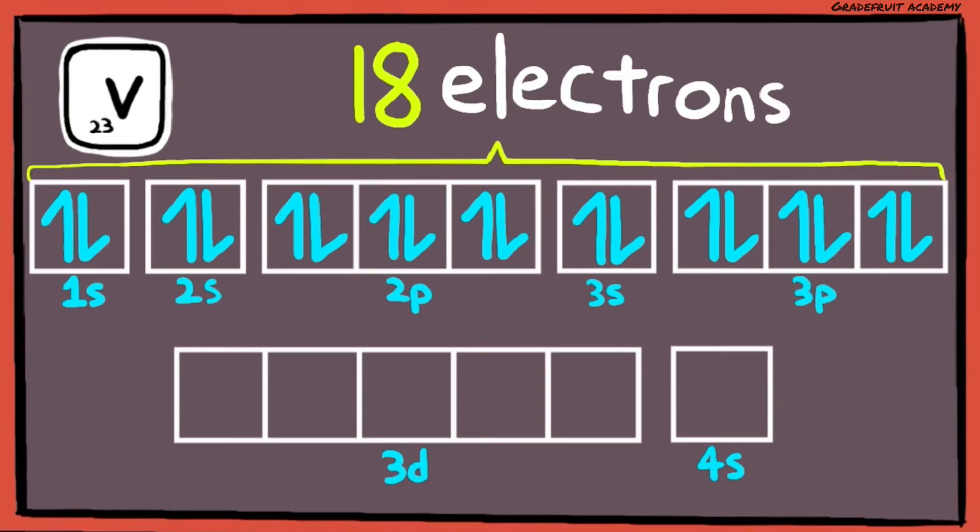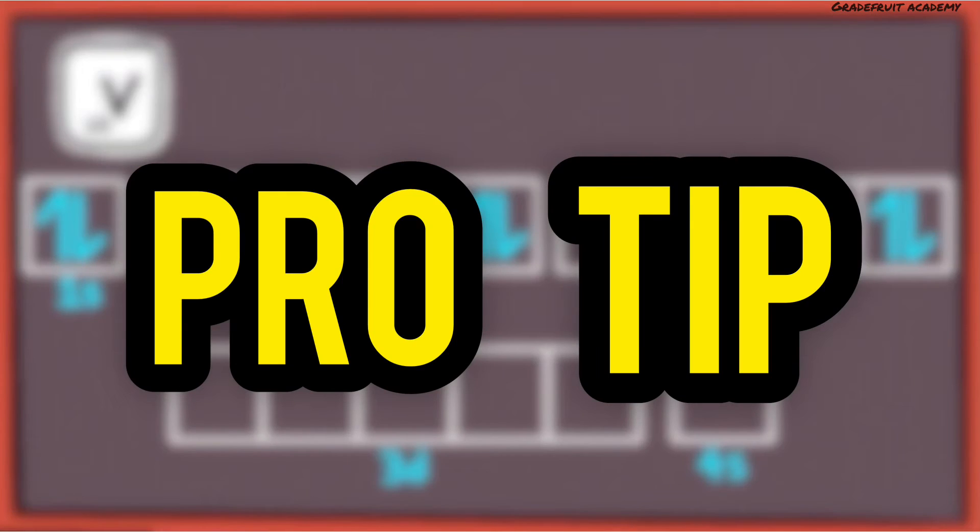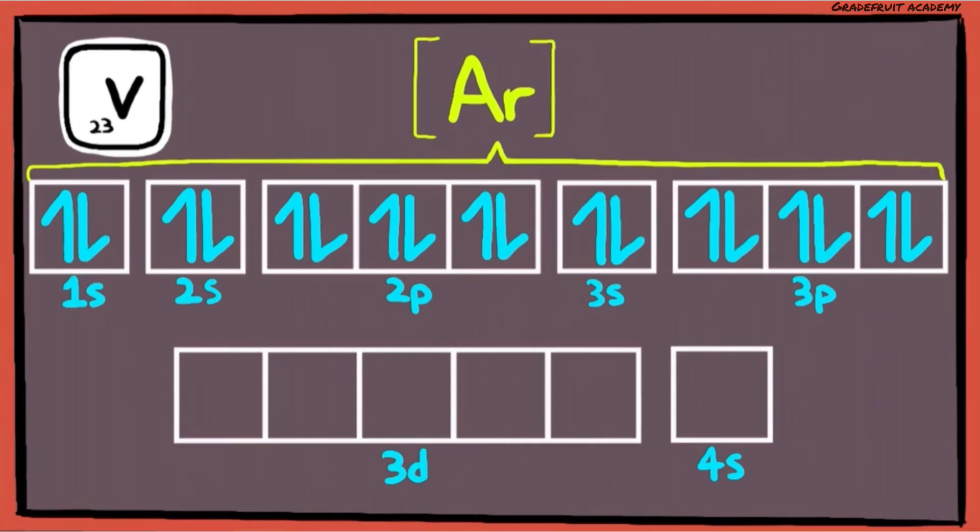At this stage, we have filled up 18 electrons, which gives us 5 electrons left to complete the diagram. Pro tip, you can use bracket Ar to represent this whole thing, as argon has the exact same electronic configuration with 18 electrons.